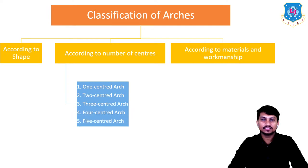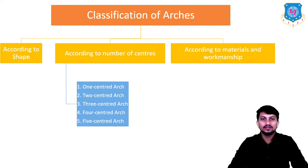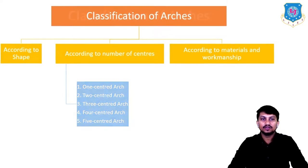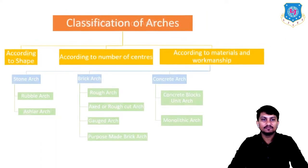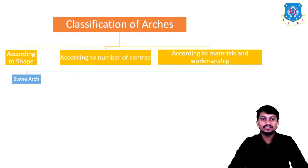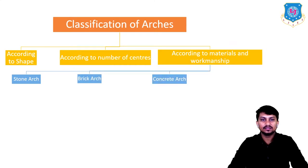Types of arches according to number of centers are of five types: one centered arch, two centered arch, three centered arch, four centered arch, and five centered arch. According to material and workmanship there are mainly three types: stone arch, brick arch, and concrete arch.